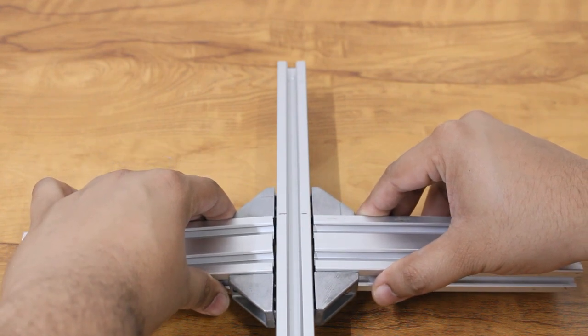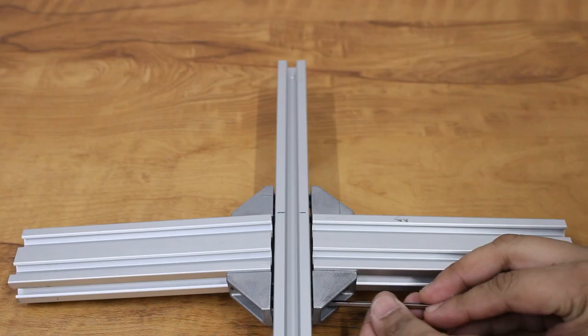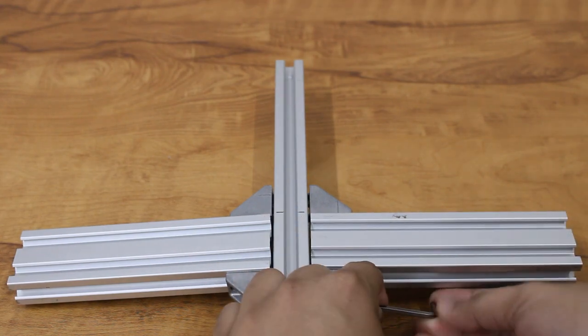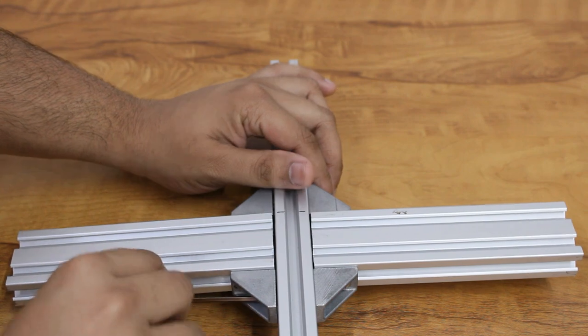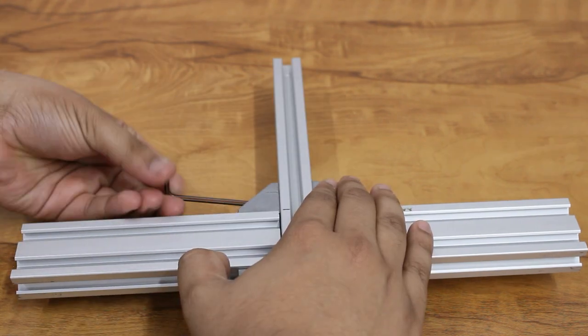Place it in such a way that the profile meets the marking. Tighten the allen screw and rotate the profile.